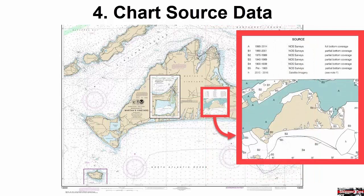You'll want to know how recent the sounding surveys were made in the area you sail or cruise — turn to the source diagrams to find this information. The northern approaches to Martha's Vineyard were last surveyed in 2014 with full bottom coverage, but the eastern and southern sides show much older surveys, some going back as far as pre-1900. Use the source data to help you choose the safe side of landfall or approaches to an island or headland.